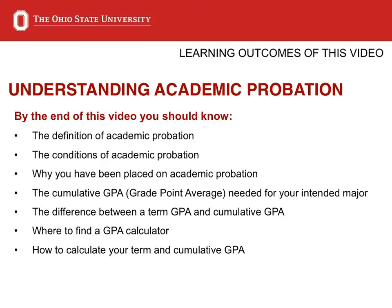First, in this video, we will start with the basics. We will cover the definition of academic probation as defined in your student handbook, the conditions of academic probation — a list of requirements you must fulfill to return to good academic standing — and why you have been placed on probation this term. We will also cover the required cumulative GPA for your intended major, the difference between term and semester GPA and cumulative GPA, where to find a grade point average calculator, and how to calculate your term and cumulative GPA.